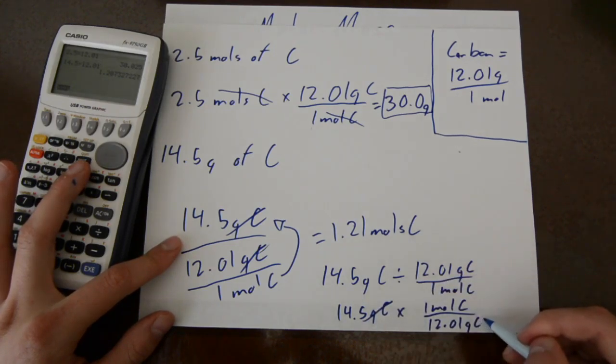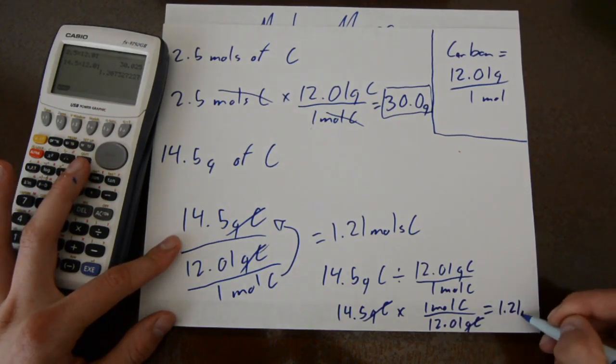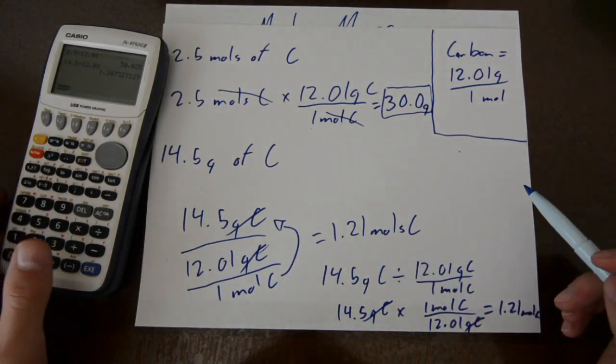So grams of carbon cross out and you're left with moles of carbon and you get the same answer, 1.21 moles of carbon in 14.5 grams of carbon.